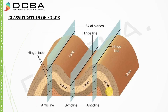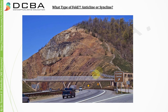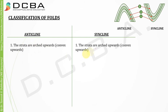In a folded pattern, you will most of the time encounter both an anticline as well as a syncline. A fold that arches upward is an anticline, and a fold that arches downward is a syncline. A syncline is concave upwards or convex downwards — both descriptions are acceptable.